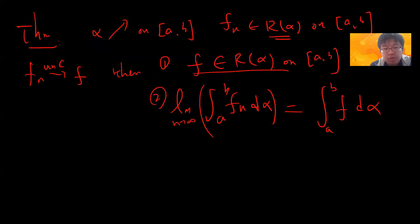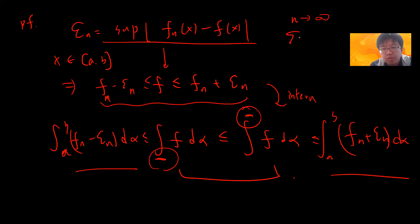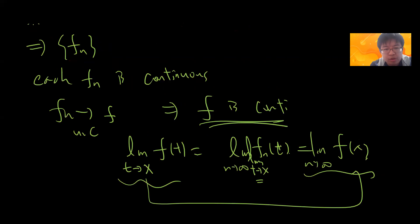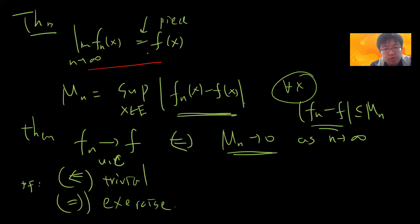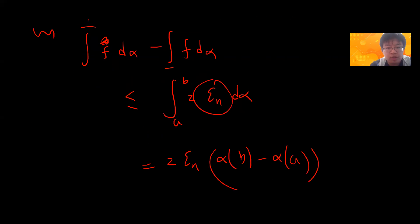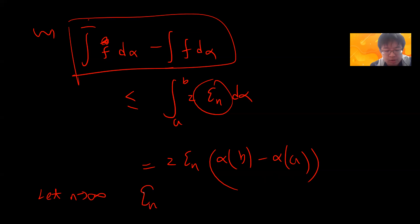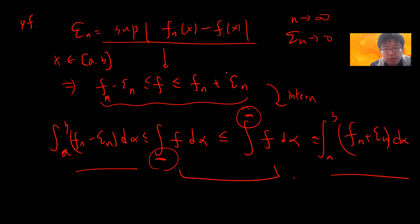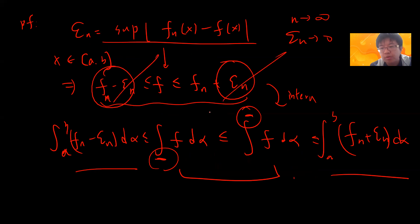As n goes to infinity, epsilon_n goes to zero — this is what was proved in the previous video, that fn converges to f uniformly if and only if epsilon_n goes to zero as n goes to infinity. So as n goes to infinity, the upper and lower bounds become arbitrarily small, and we prove that f is Riemann integrable with respect to alpha on [a, b]. Not only that, since f is R-alpha integrable on [a, b], as n goes to infinity the integral of fn converges to the integral of f.